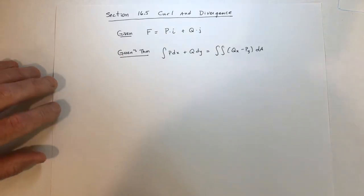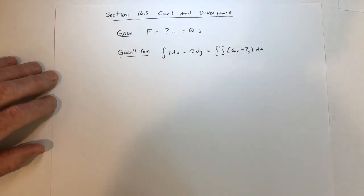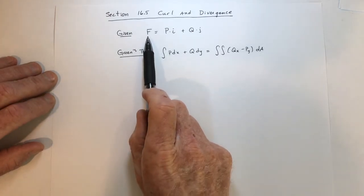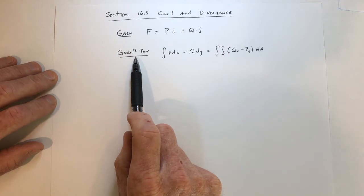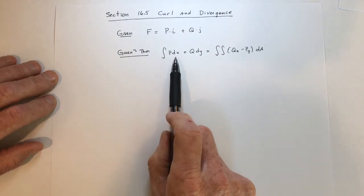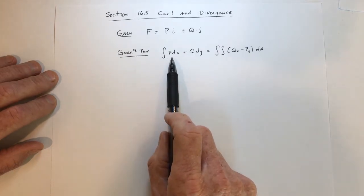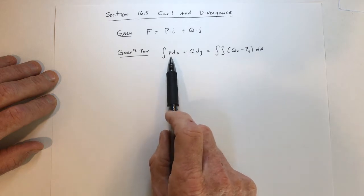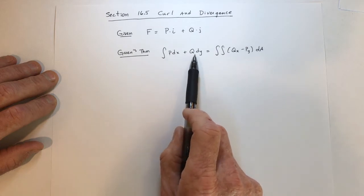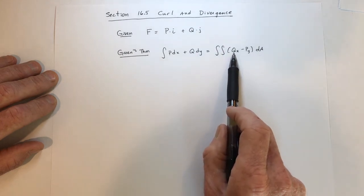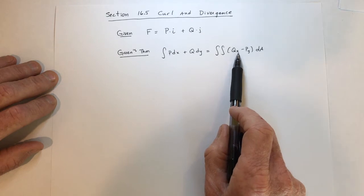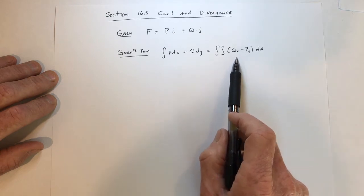And now for section 16.5, the curl and the divergence. Suppose that you have a vector-valued function in two dimensions with an x-component and a y-component. In the previous section, we covered Green's theorem, which says if you want to calculate the amount of work that force is doing, you could use p dx + q dy, or change it to a double integral by taking the derivative of q with respect to x, the derivative of p with respect to y, and then subtract.